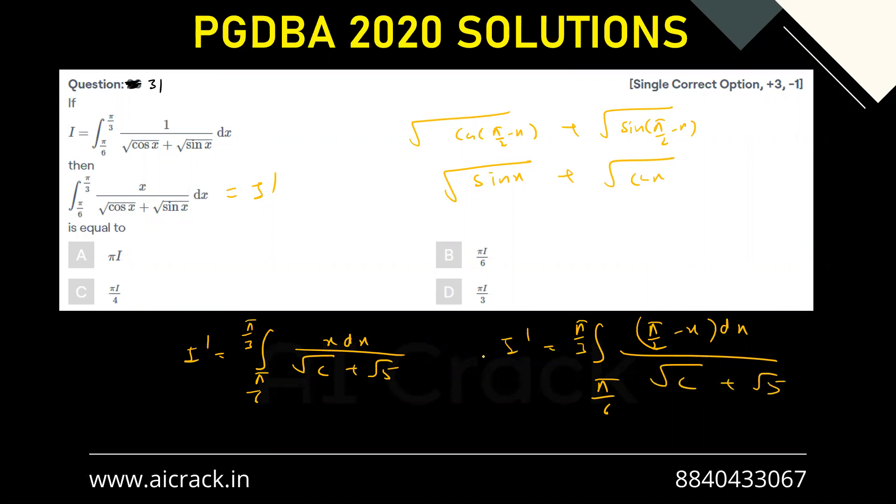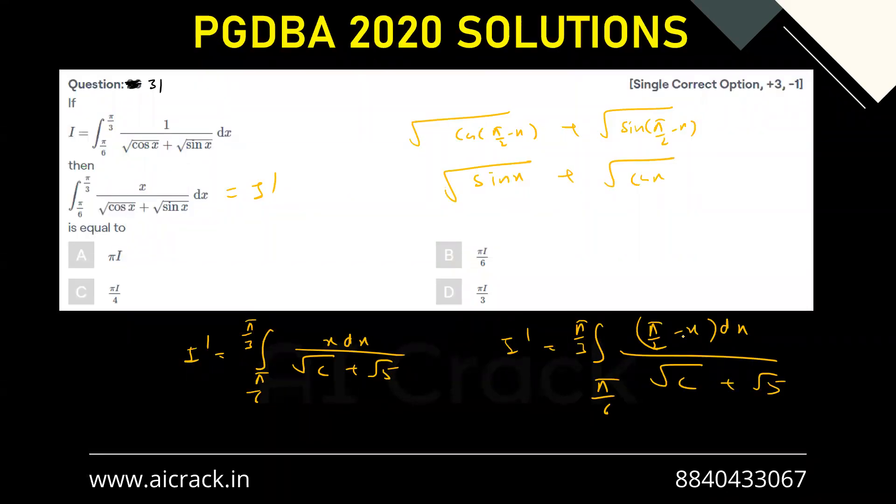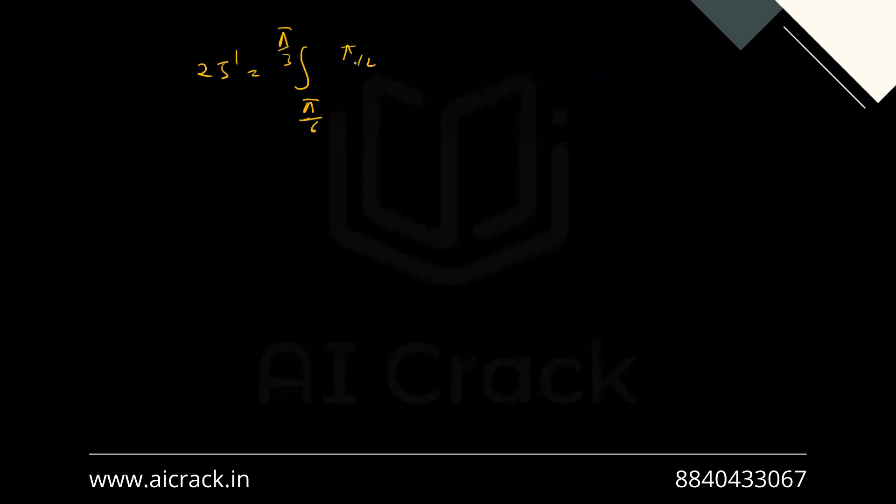So if I add both of them, I'll be getting 2i dash equals pi by 6 to pi by 3. And this minus x and x gets cancelled out. We'll be getting pi by 2 in the numerator divided by under root cos x plus under root sine x dx.